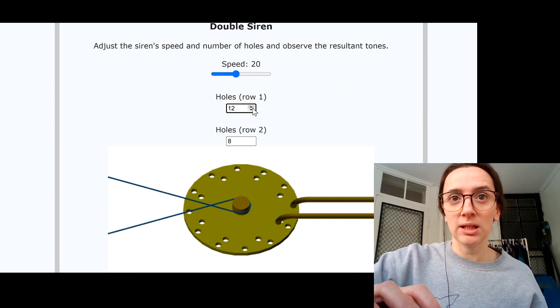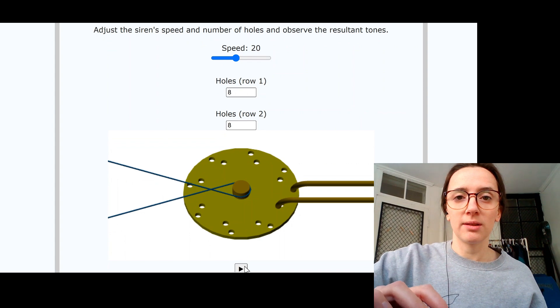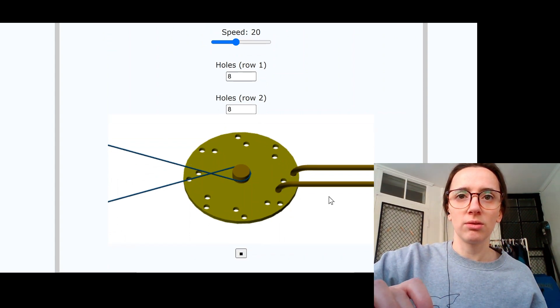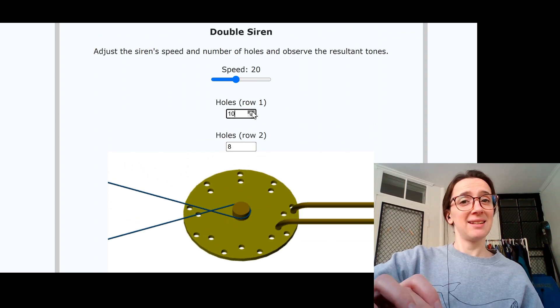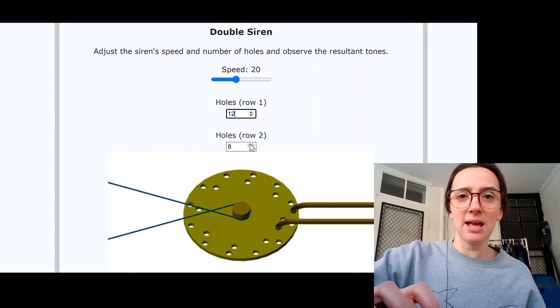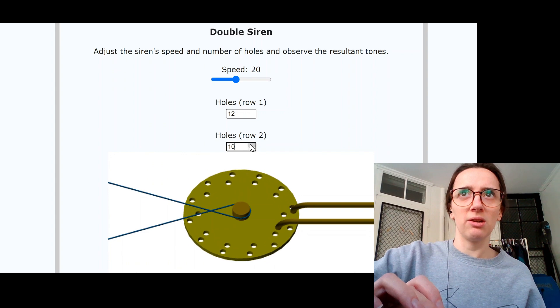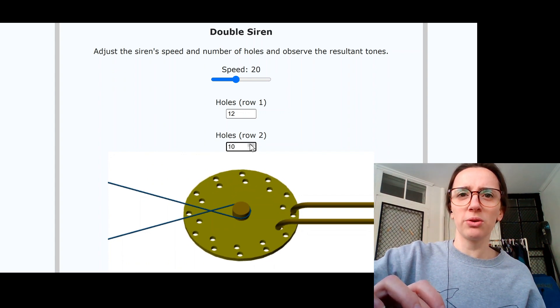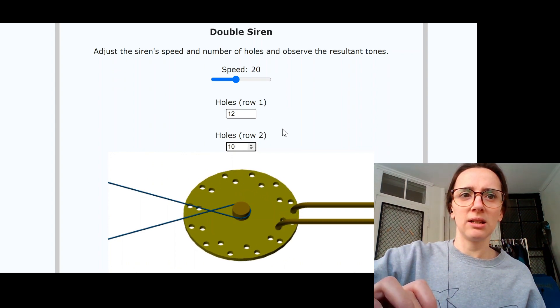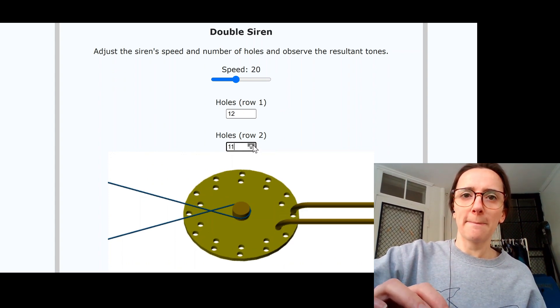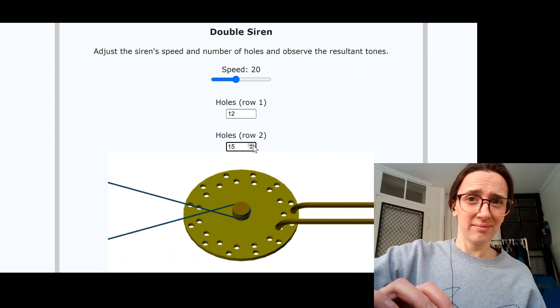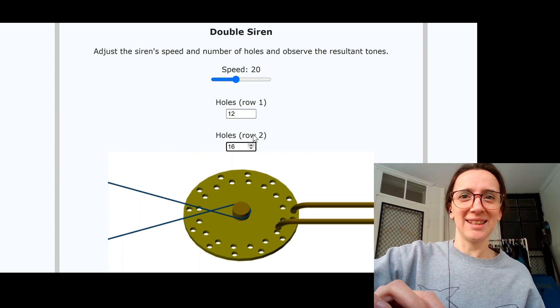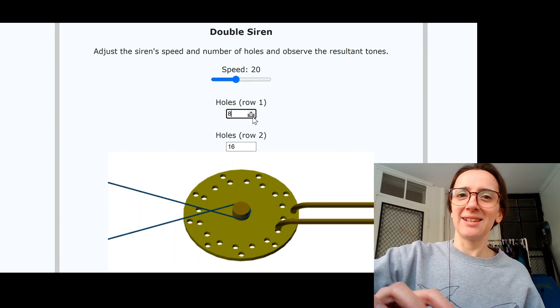4 to 5 is a major third and 5 to 6 is a minor third. I want to start with 8 holes in unison. If we move this up to 10, that's our major third. And up to 12 is our perfect fifth. Now if we move this up to 10, that should be our minor third. To get our fourth, we need 12 and 16. Here we go. And this one back down to 8 gives us our octave.